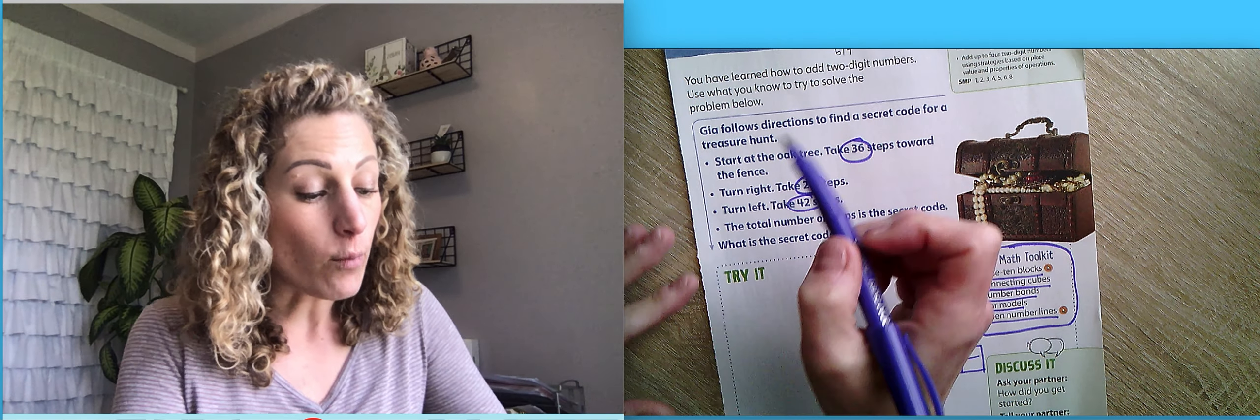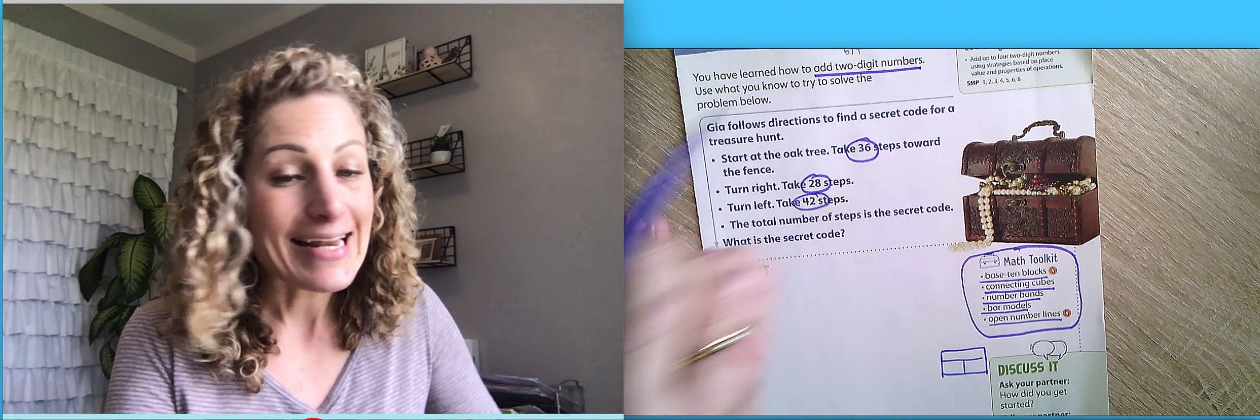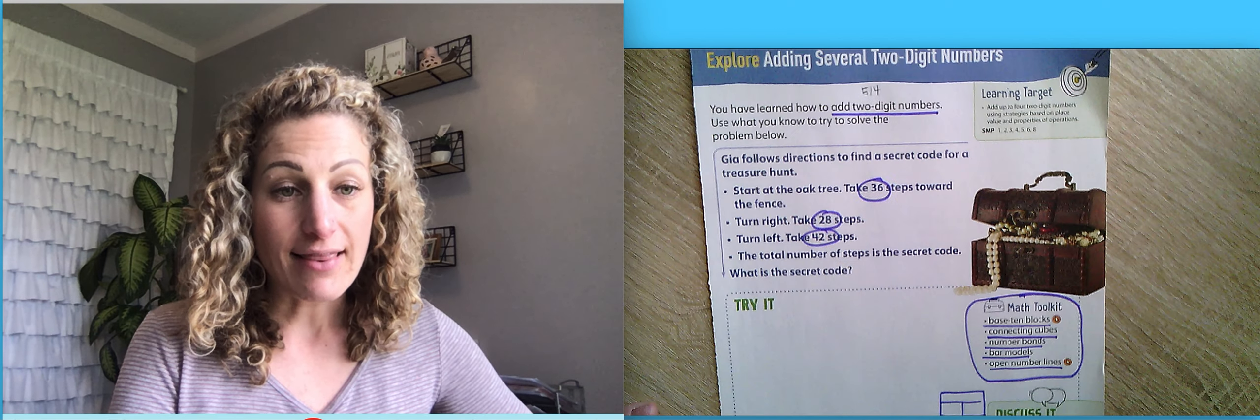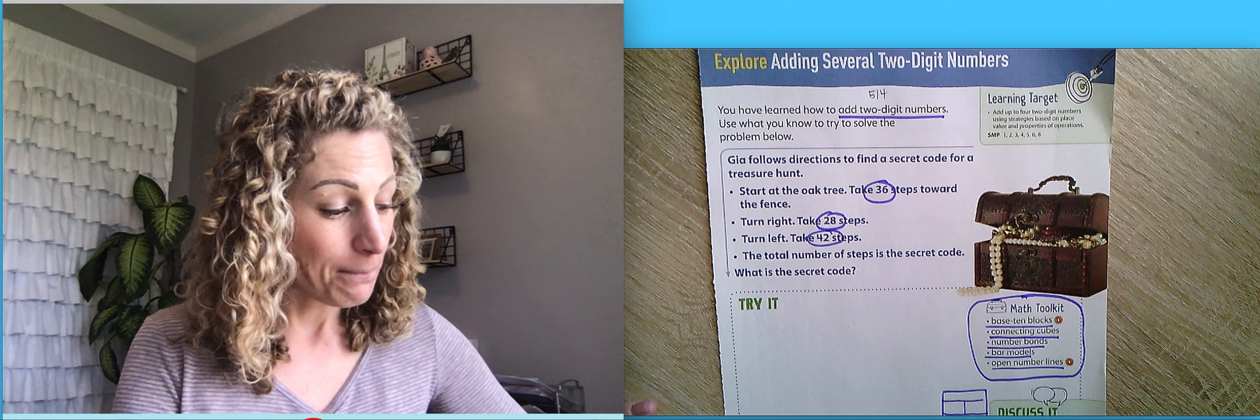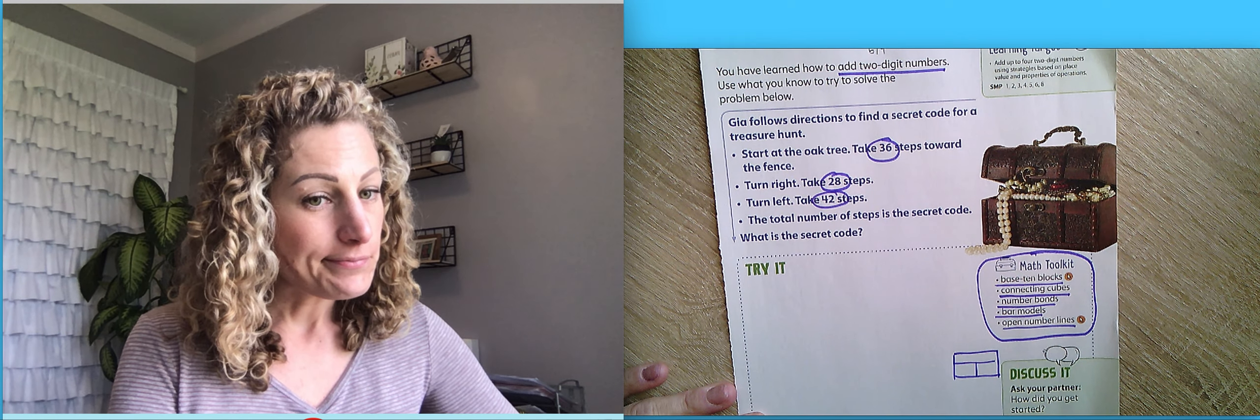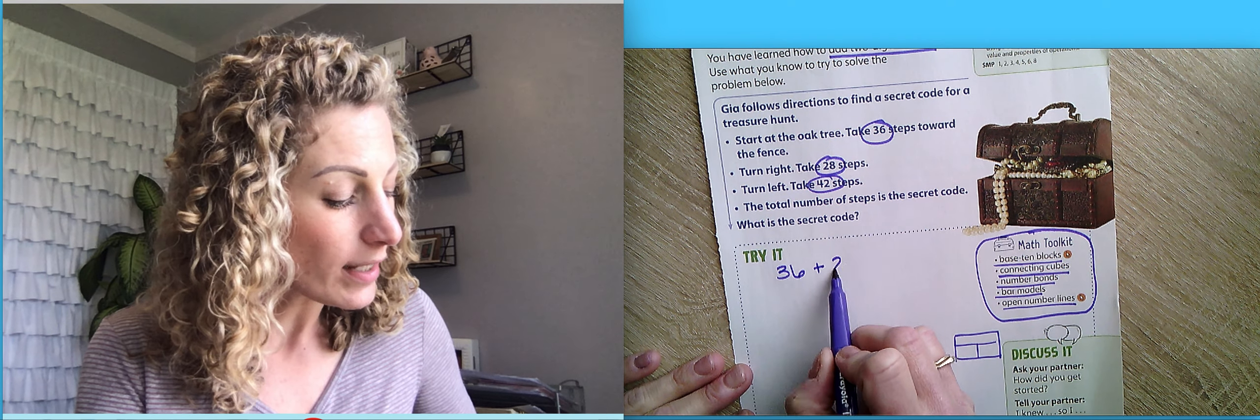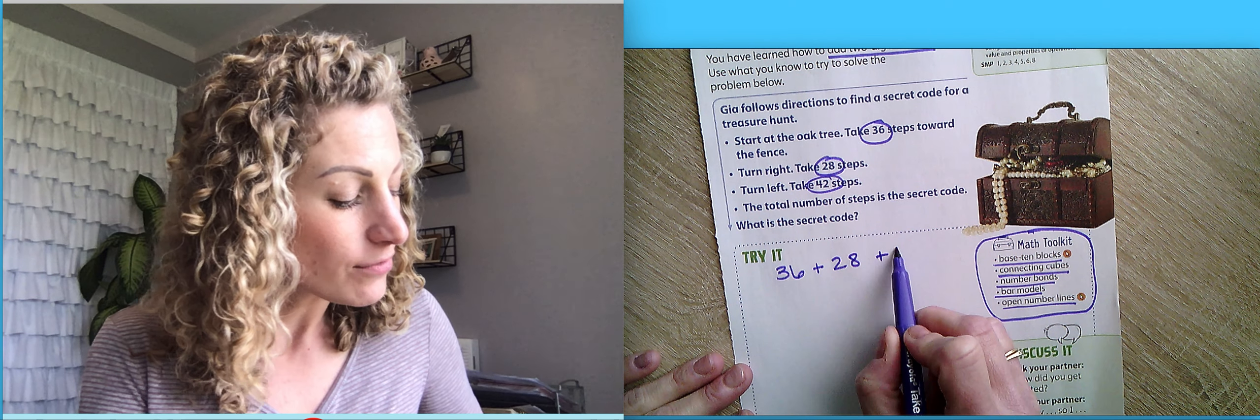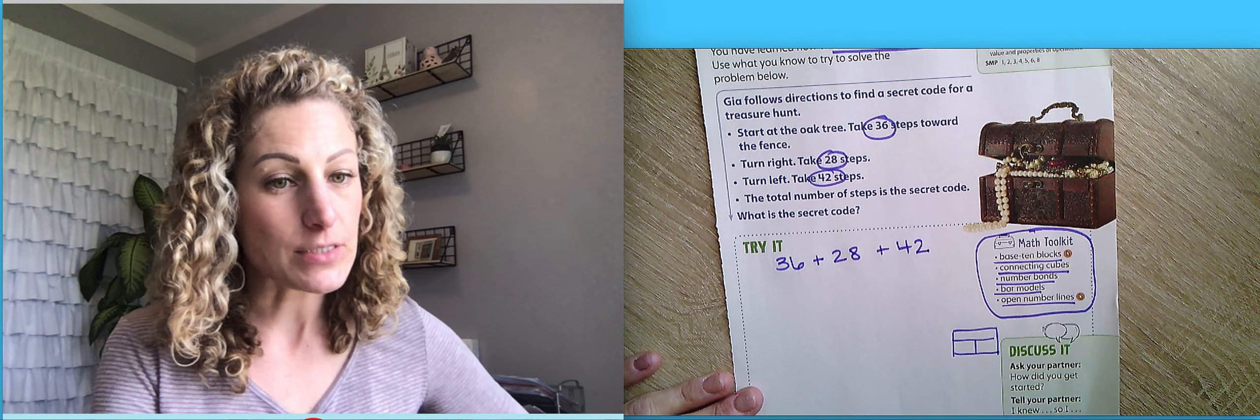So I'm going to circle the three numbers because that is what is important. I also know that we are adding two-digit numbers. That is our lesson today. Let's take a peek. We have 36 plus 28 plus 42. That's what we're adding.